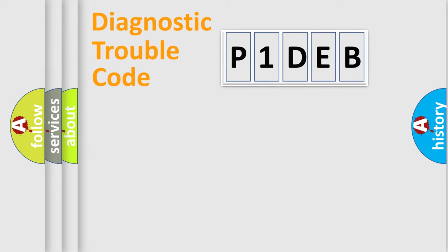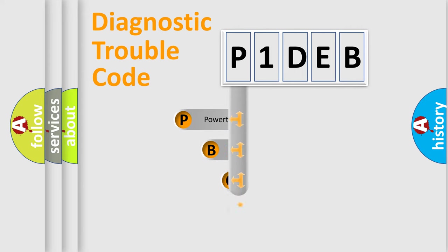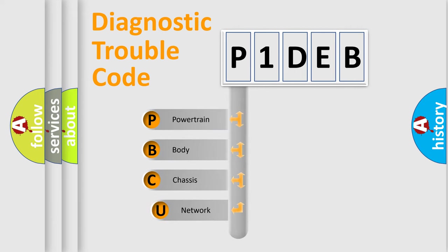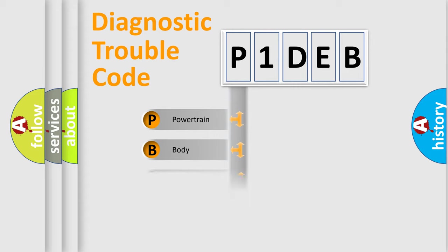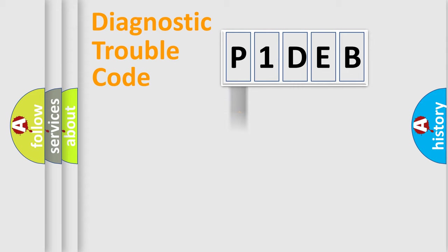Let's do this. First, let's look at the history of diagnostic fault code composition according to the OBD2 protocol, which is unified for all automakers since 2000. We divide the electric system of the automobile into four basic units: Powertrain, Body, Chassis, and Network.